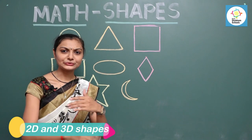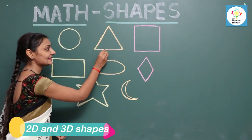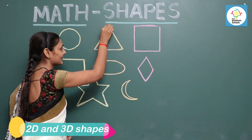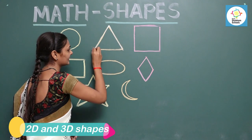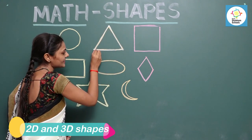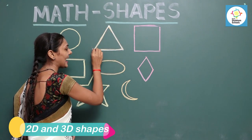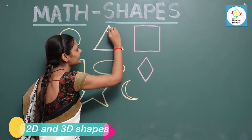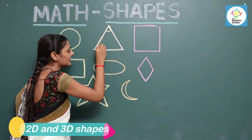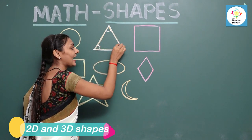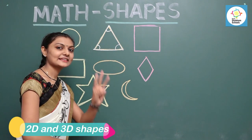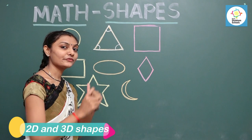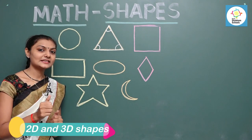Let's move to the triangle. This is a triangle. A triangle has three sides — one, two, and three — as well as three corners. A triangle has three sides and three corners, so we call it a triangle. Understood?